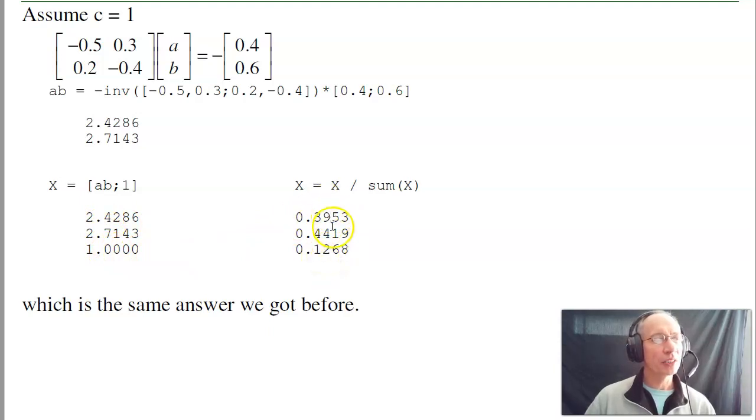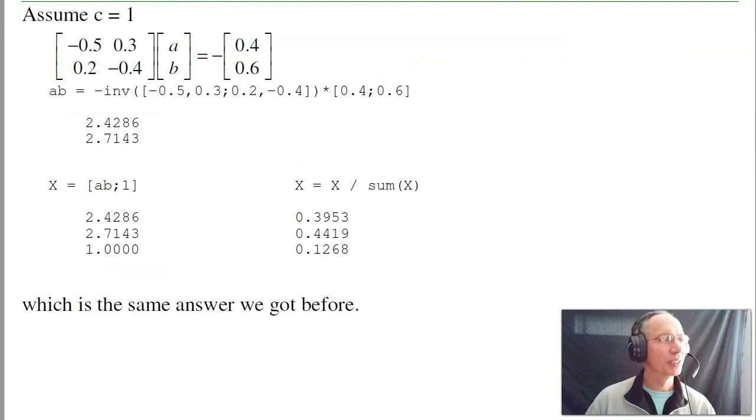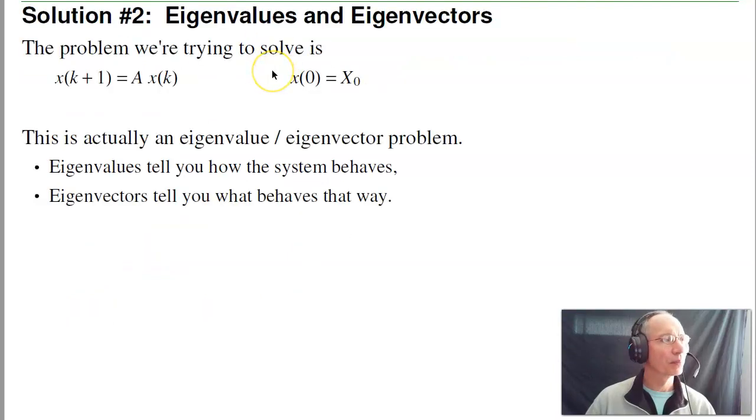If you notice, this number, 0.39, 0.44, 0.12, is the same thing we got here. 0.39, 0.44. I think they are the same, I just transposed two numbers.